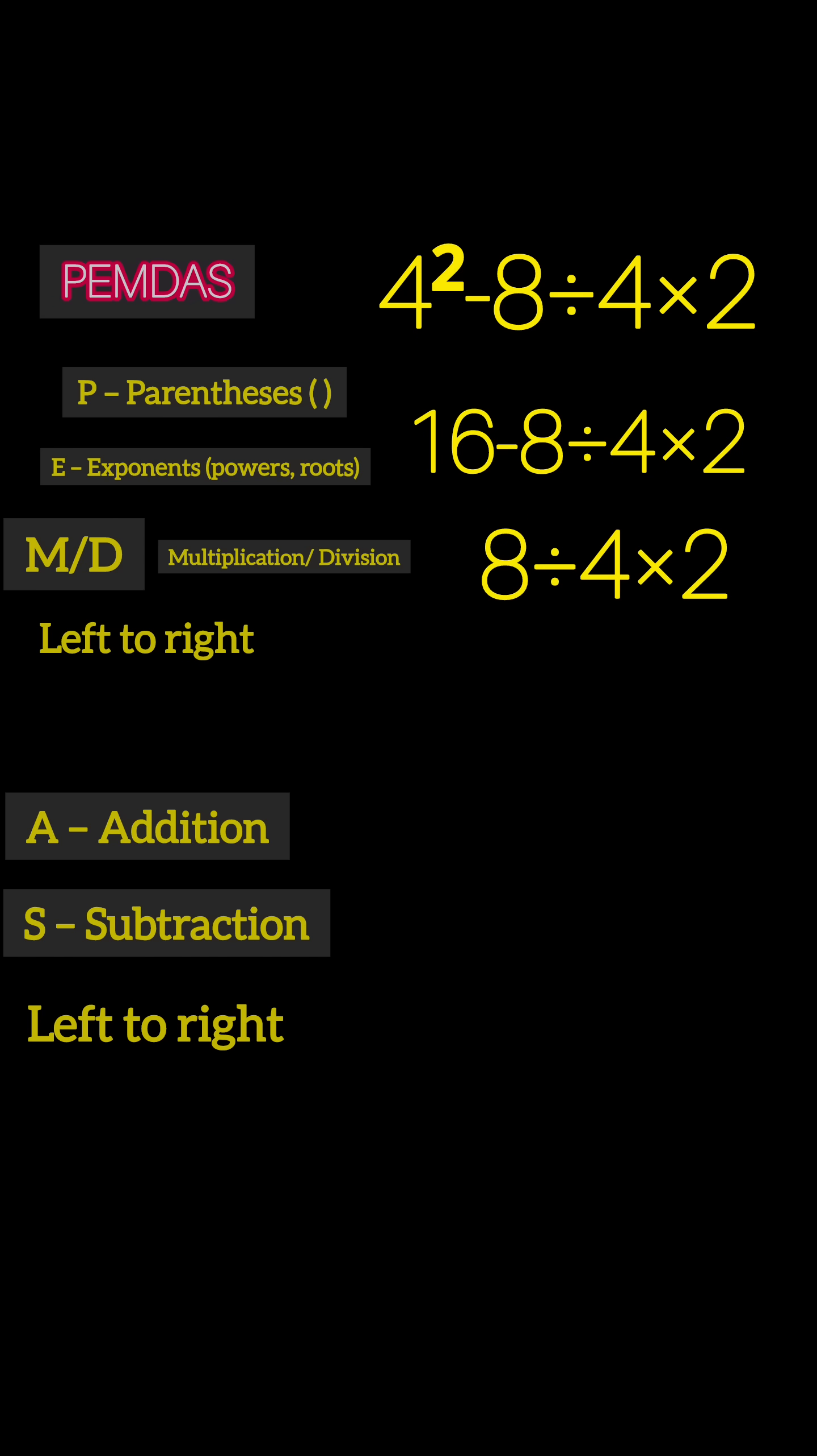Now 8 ÷ 4 = 2, and then 2 × 2 = 4. And that's wrong too, because subtraction shouldn't happen before division or multiplication. You can't just read it left to right and hope for the best.